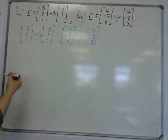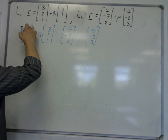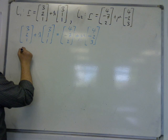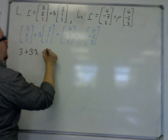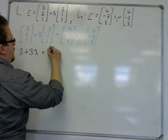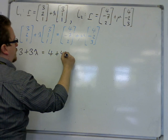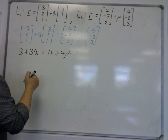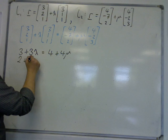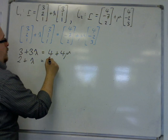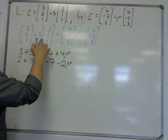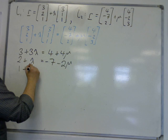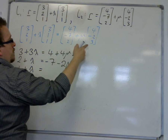And from that we get three sets of simultaneous equations: 3 plus 3 lambda is equal to 4 plus 4 mu. We also get 2 plus lambda is equal to minus 7 minus 2 mu, and 1 plus lambda is equal to 2 plus 3 mu.